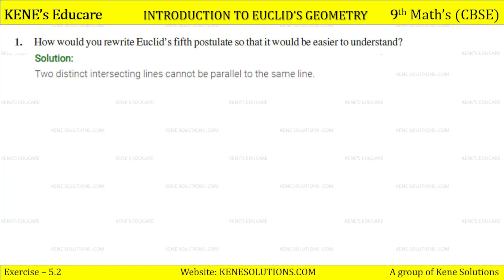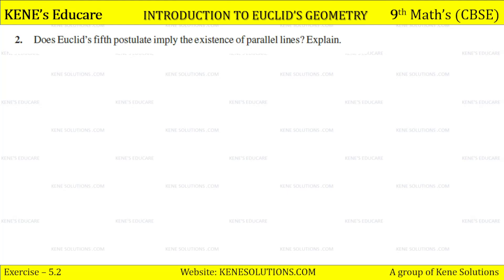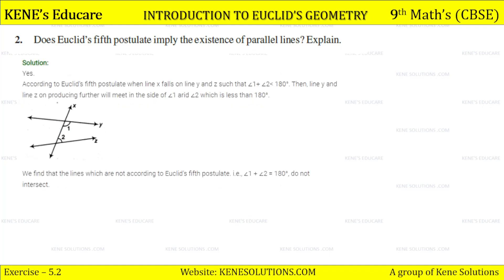Question 2: Does Euclid's fifth postulate imply the existence of parallel lines? Explain. Yes. According to Euclid's fifth postulate, when line X falls on line Y and Z such that angle one plus angle two is less than 180 degrees, then line Y and line Z on being produced further will meet on the side of angle one and angle two.